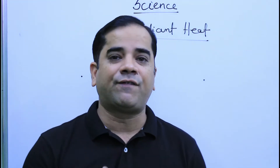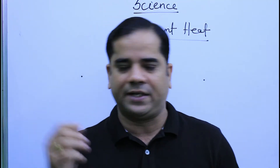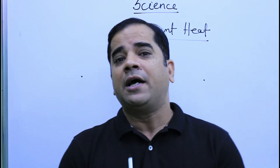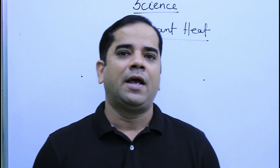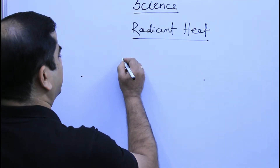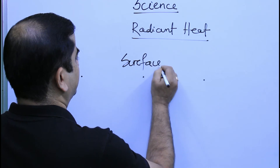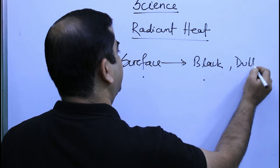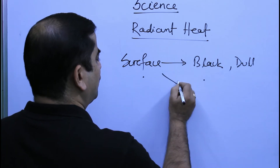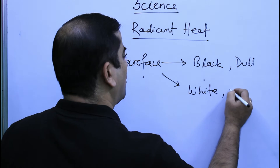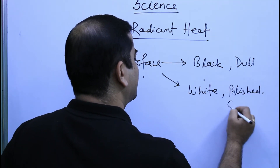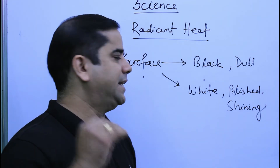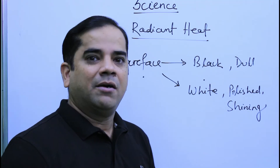Whenever radiation falls on a body, the surface either absorbs the heat energy or reflects it — that depends on the surface. Experimentally it is proved that objects or surfaces which are black or dull absorb the heat energy, while surfaces which are white, polished, or shiny reflect the heat energy.